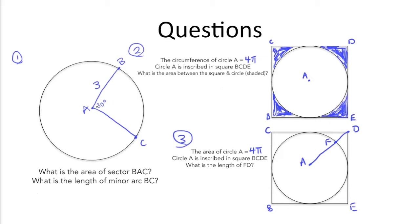So the sector BAC here has a central angle of 30 degrees, which means that we know that in proportion it's 30 over 360, 360 being the total number of degrees inside the central angle of the circle.